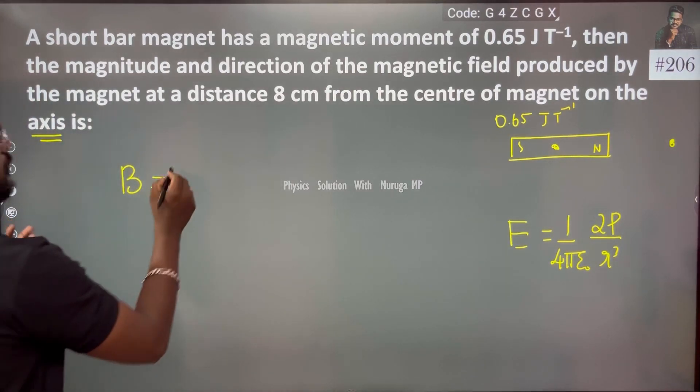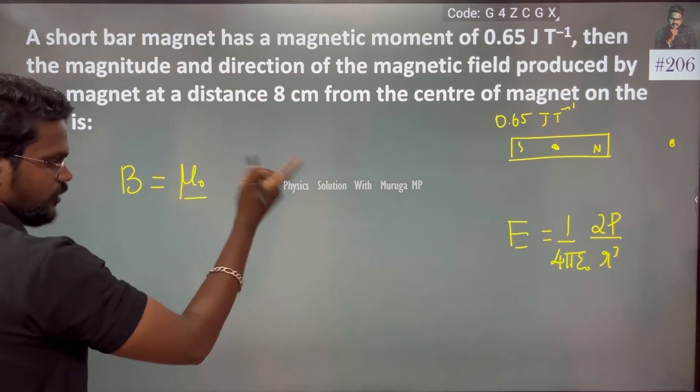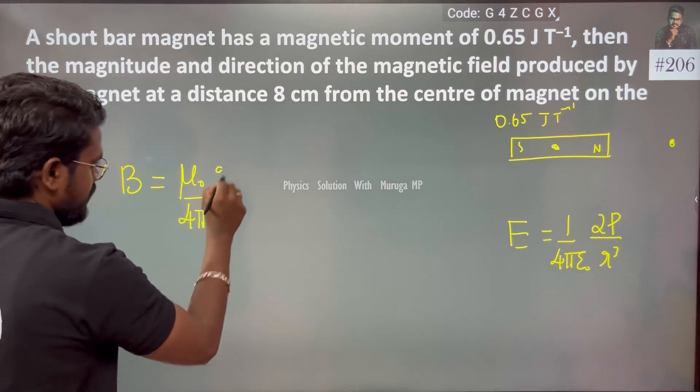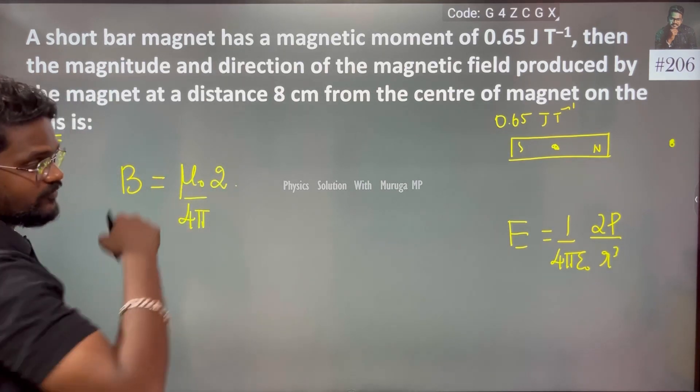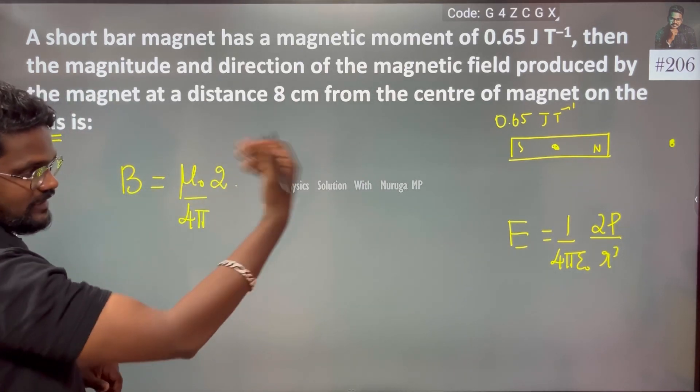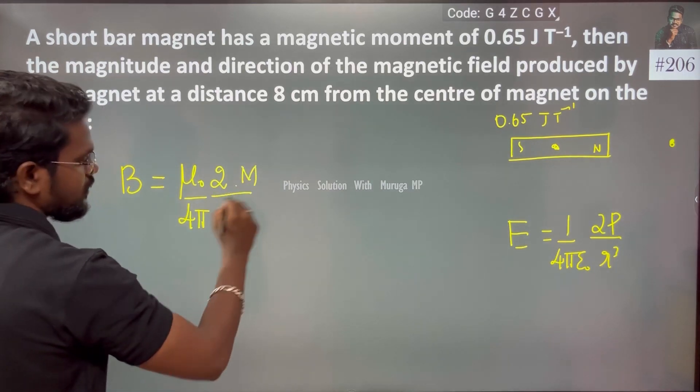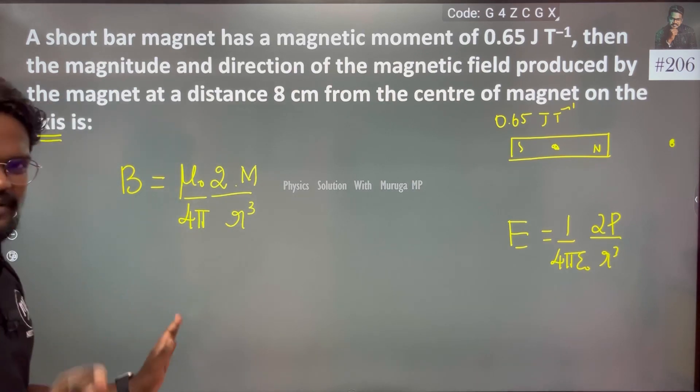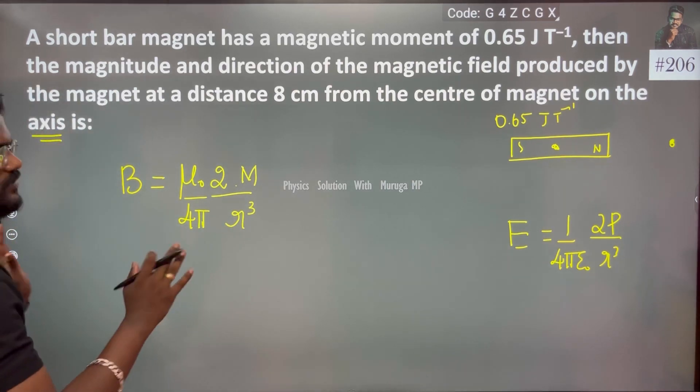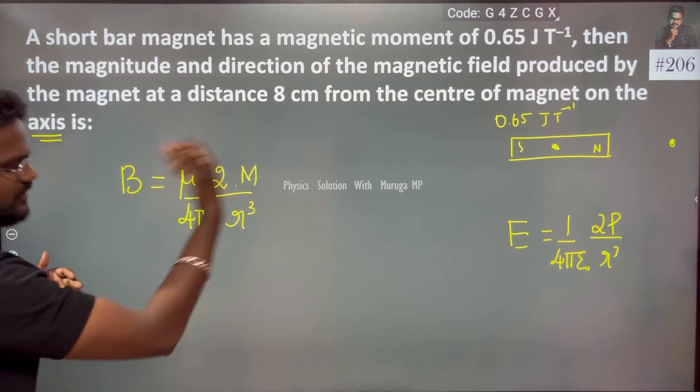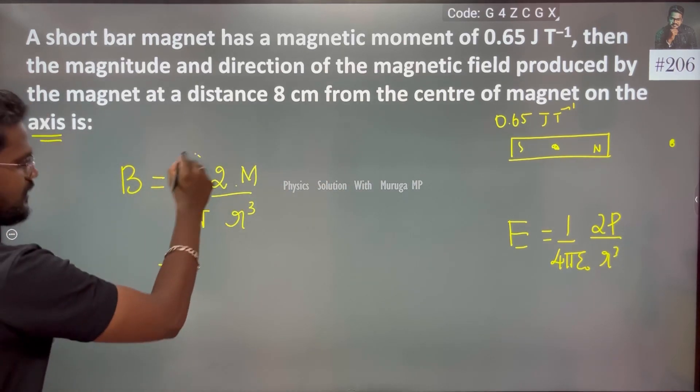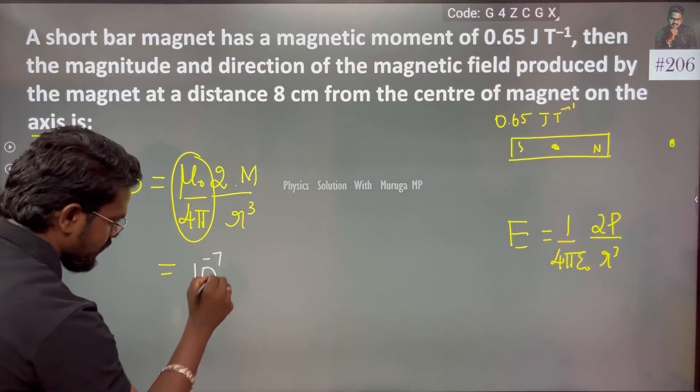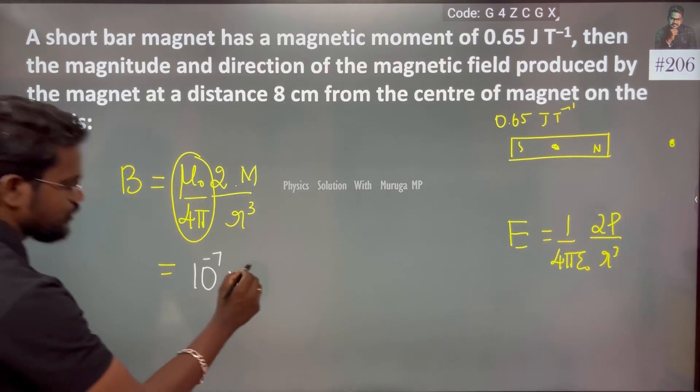Magnetic field is very similar. So on the axial line instead of 1 by 4πε₀ we will have μ₀ by 4π, and that is 2. There is magnetic field instead of the electric dipole moment, magnetic moment M divided by the same distance r cube. That formula is similar to the electric field and the magnetic field. That is the axial, the constant which is nothing but 10 to the power minus 7 times 2 times...